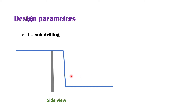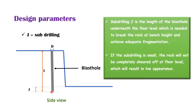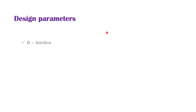The L is the length of the blast hole. This extra amount of drilling that is below the floor level of the bench to the bottom of the blast hole is called the sub drilling. Sub drilling is the length of the blast hole underneath the floor level, which is needed to break the rock at the bench height and achieve adequate fragmentation. In cases where the sub drilling is small, the rock will not be completely sheared up at the floor level, which results in a poor appearance.